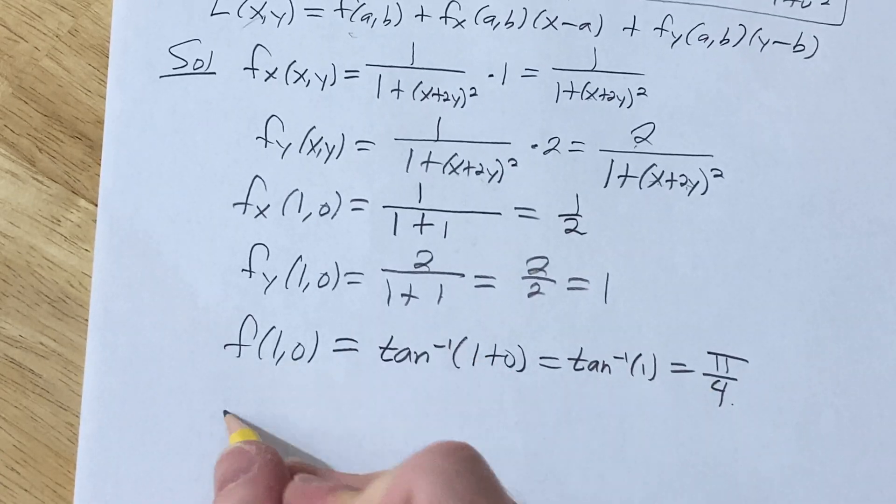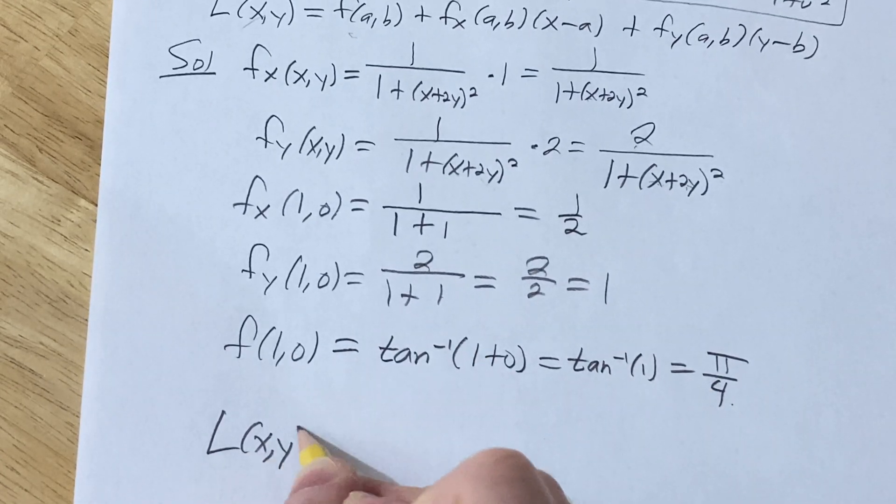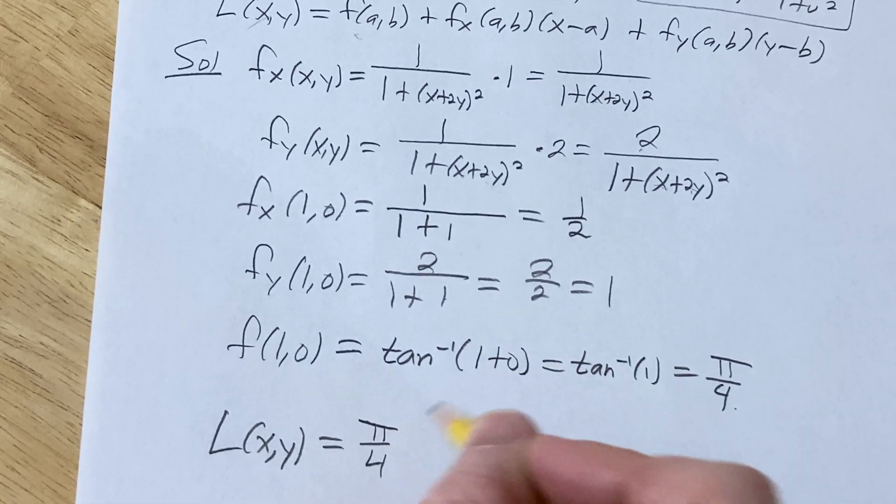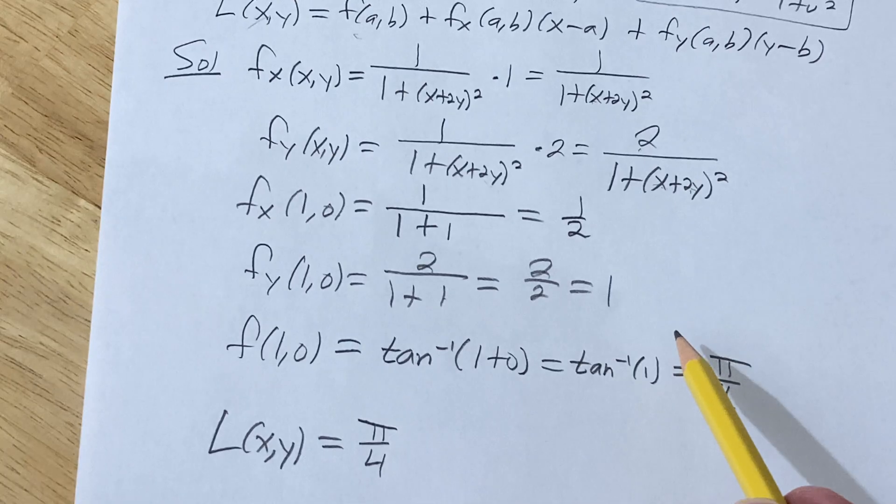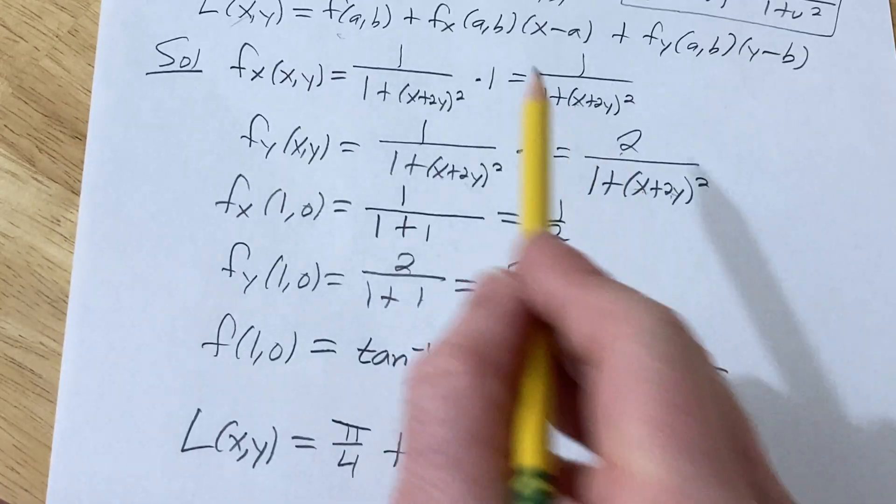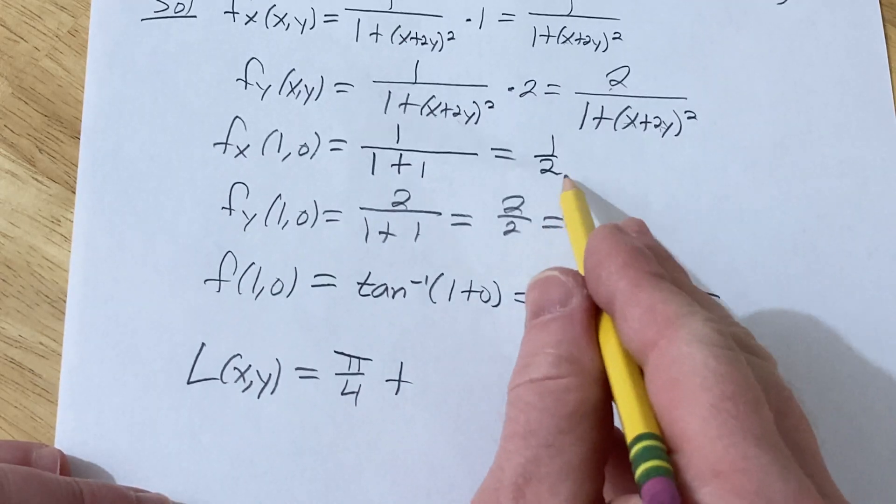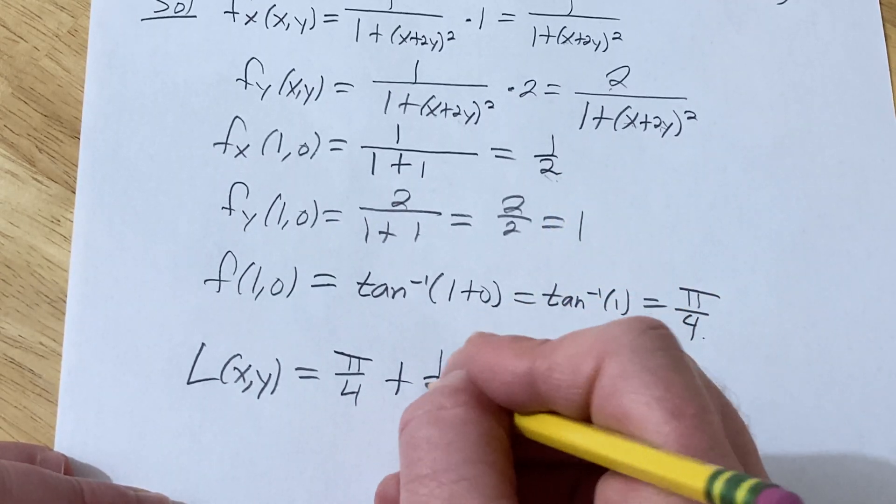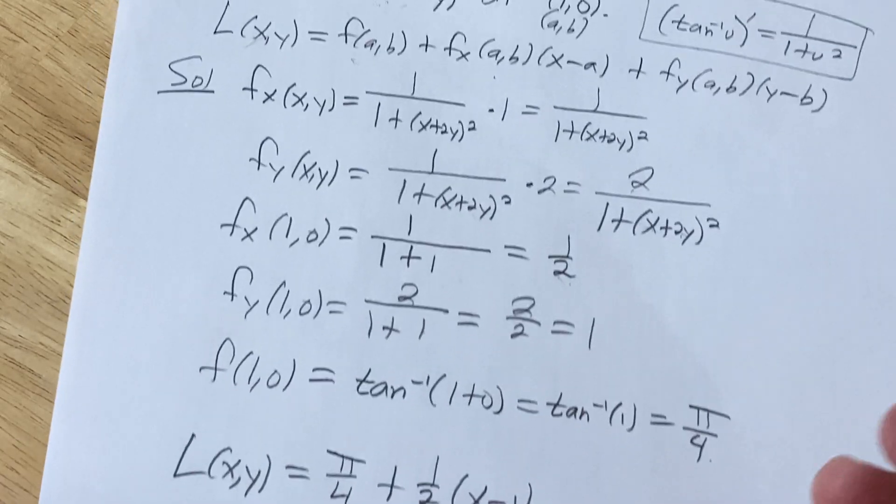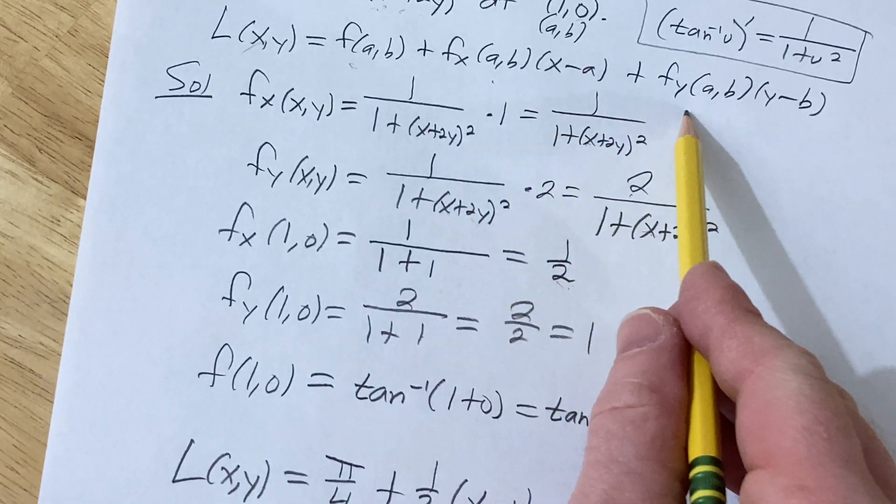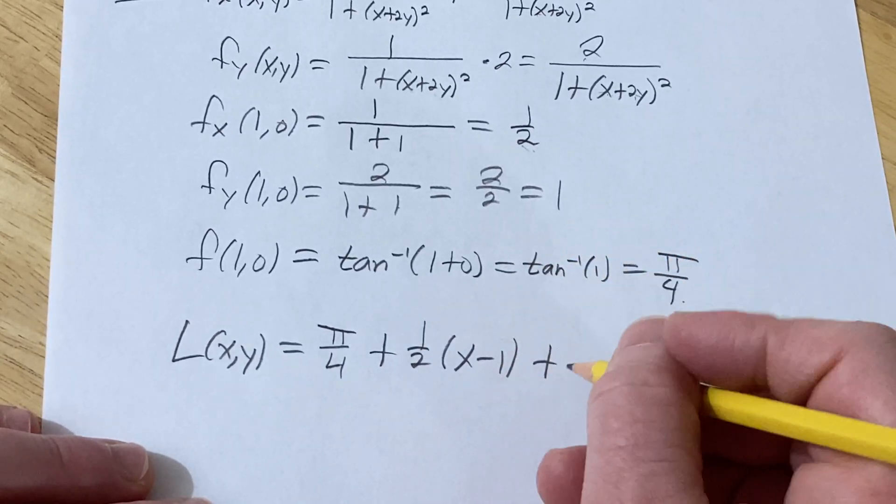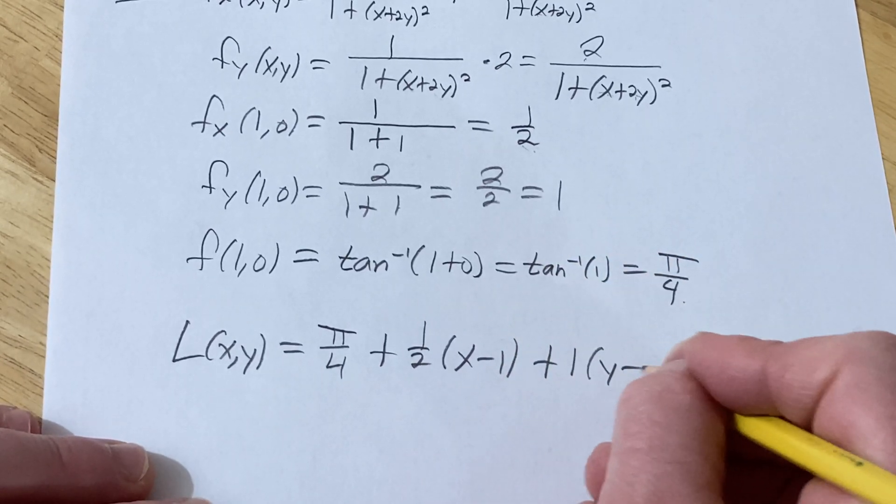Okay, so now let's go ahead and write it out. L(x,y) is equal to π over 4. All right, that's our f(1,0), π over 4. Plus, and then this one, fx, we know that's going to be 1 half, times x minus a, so x minus 1. Okay, that's x minus a. And then fy, y minus b. So that's going to be, fy is 1, and then y minus 0.